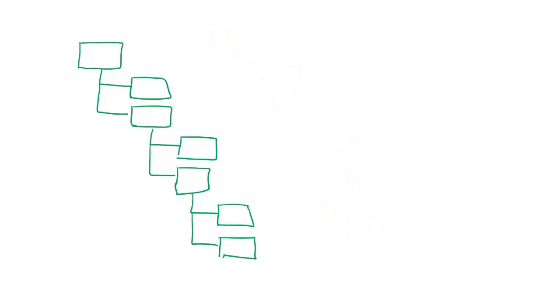FCCS makes use of S-Base as its database. S-Base has two types of dimensions. Firstly, dense dimensions. In the case of FCCS, the only dense dimension is the account dimension. Dense dimensions generally contain a mixture of stored members and dynamically calculated members.